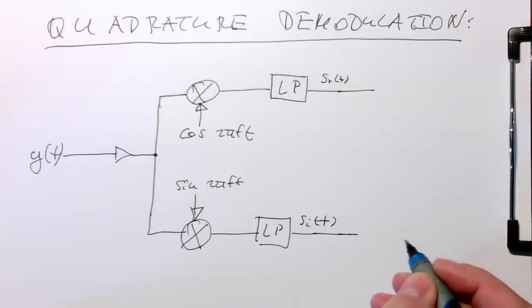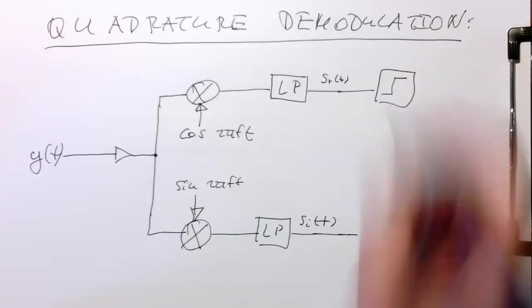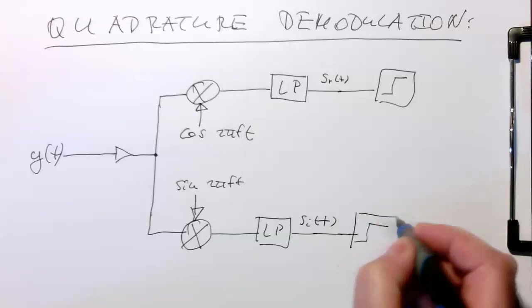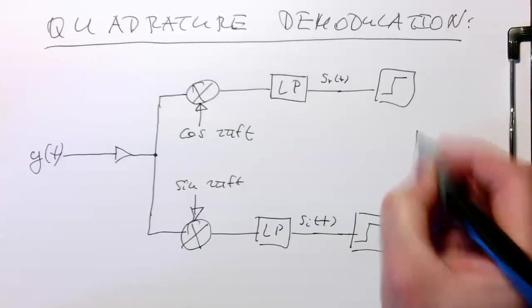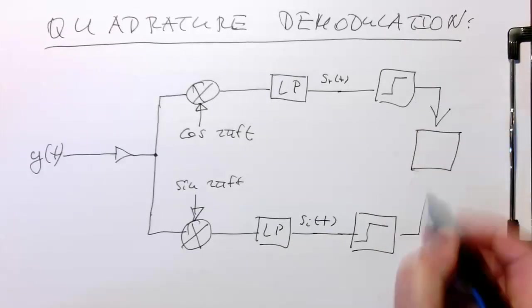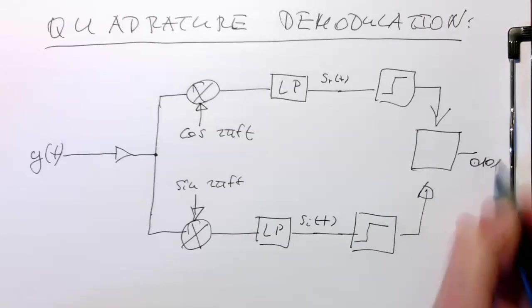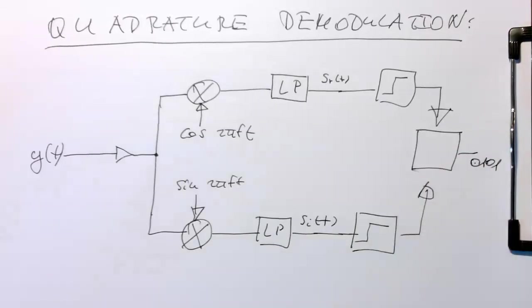And then we've got obviously again a threshold here. Then we just need to combine this data. And we're getting our bit stream back out there again. So simple as that.